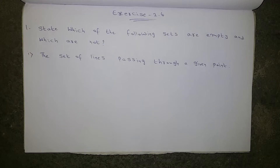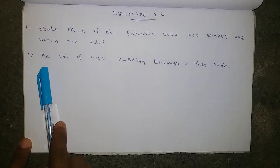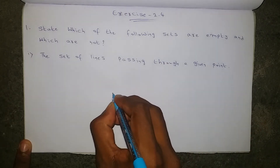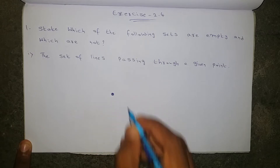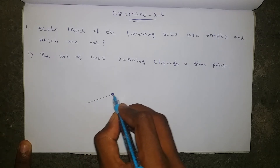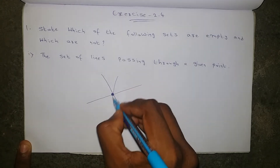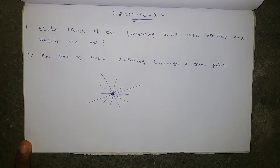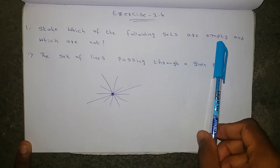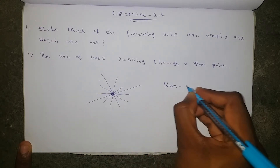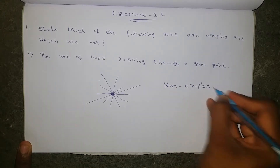Bit number one: state which of the following sets are empty sets and which are not. First question — the set of lines passing through a given point. Only one point is there. Based on this single point, how many lines can pass? Infinite number of lines can pass. So it is compulsory a non-empty set.